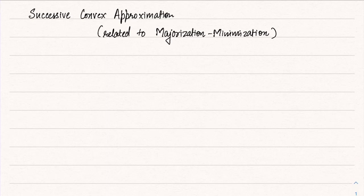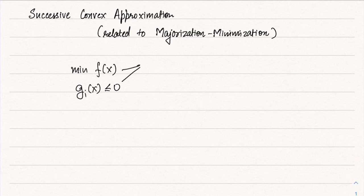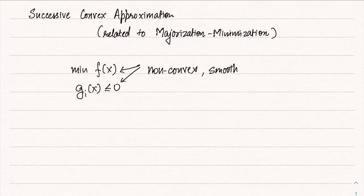The approach considers the problem: minimize f(x) subject to g_i(x) ≤ 0. Both the objective and the constraints are non-convex, but they are smooth functions. We have already seen the definition of smoothness — a quadratic upper bound still exists and the gradient does not change too abruptly. The functions are differentiable but non-convex.